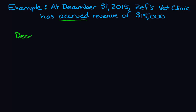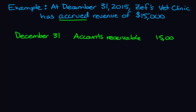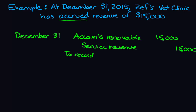So our journal entry is going to look as follows. Our date is December 31st. We're debiting accounts receivable for $15,000 because our clients owe us money, and we're crediting service revenue to increase the revenue account by $15,000. We've performed the services so we're allowed to record the revenue amount. Our description: to record accrual of service revenue.